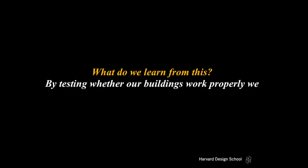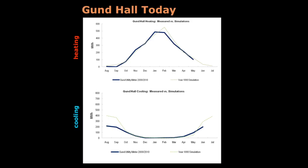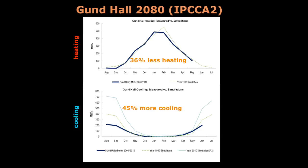What do we learn from this? By testing whether our buildings work properly, we can save a whole lot of carbon and energy without really any costs. We can also use the same technology to look into the future, piggybacking on Professor McCarthy's work to predict for different scenarios the climate of the planet. There's a process called morphing where we combine weather data currently used for building models with future climate scenarios, allowing us to predict what might happen. Applying this to Gant Hall, our calibrated model shows that by 2080 under the A2 scenario — which is more middle-of-the-road — we'll be using 36 percent less energy for heating and 45 percent more for cooling.